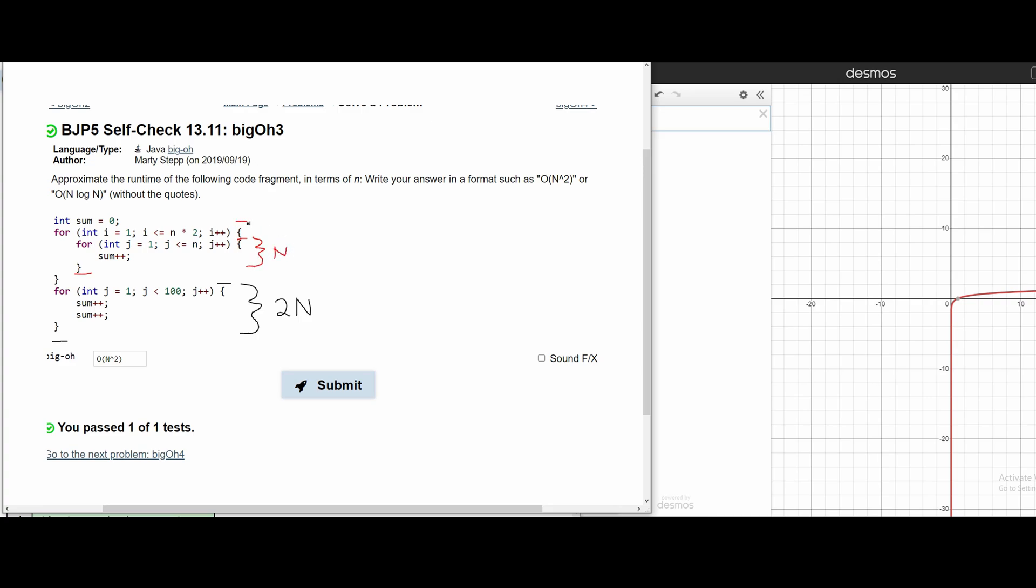And inside of this bracket and this bracket, we are going to have another n. So this equals to n squared. When we are comparing our n squared to 2n, we can easily see that n squared is bigger. So that is going to be our answer.